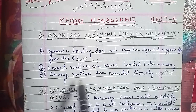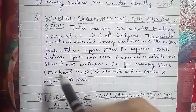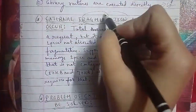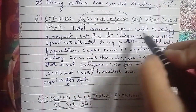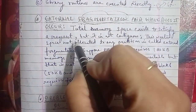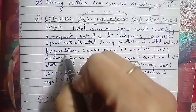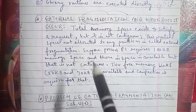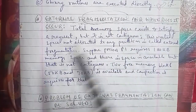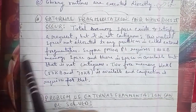The next topic is external fragmentation and when it occurs. External fragmentation is when the total memory space exists to satisfy a request but it is not contiguous. This wasted space, not allocated to any partition, is called external fragmentation. When memory exists to satisfy every request but is not contiguous, that memory space is wasted.